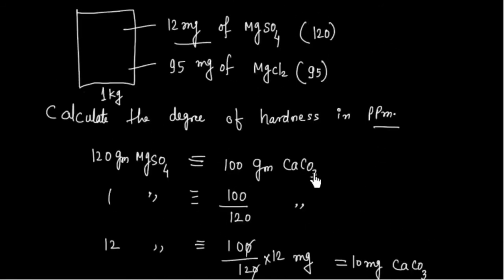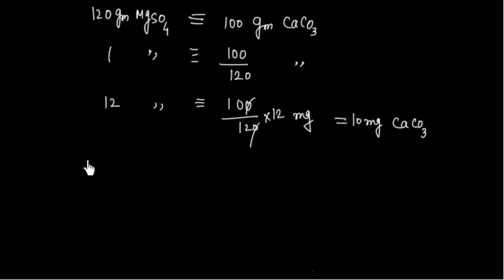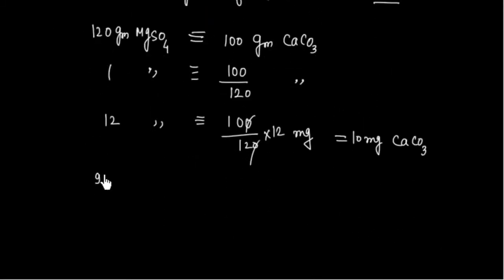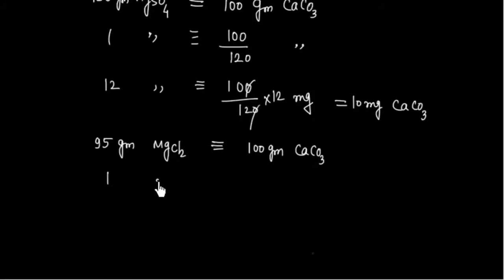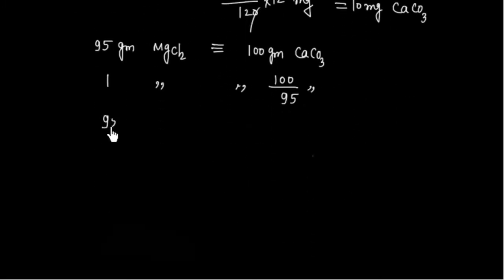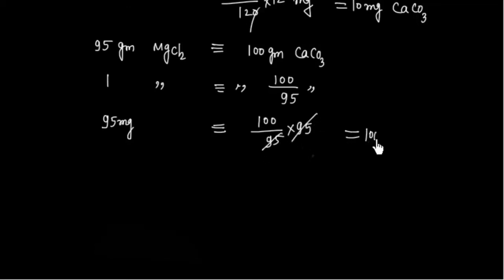Similarly, for MgCl₂: 95 g of MgCl₂ is equivalent to 100 g of CaCO₃. So 95 mg of MgCl₂ is equivalent to (100/95) × 95 = 100 mg of CaCO₃.